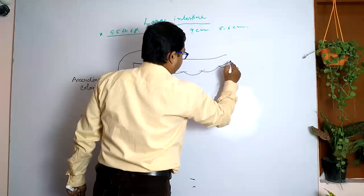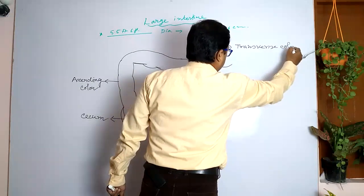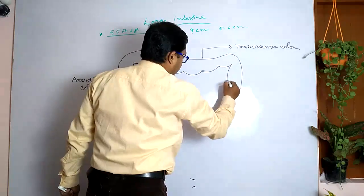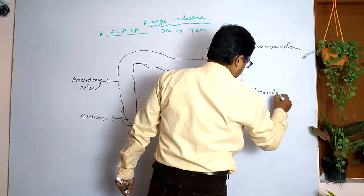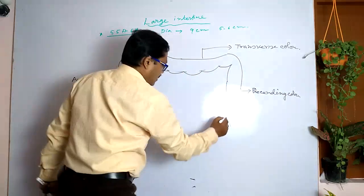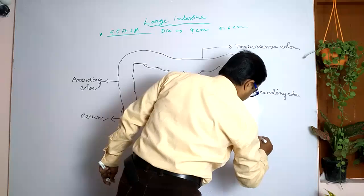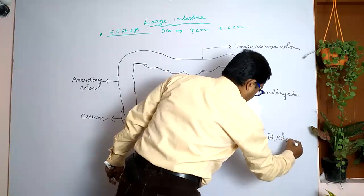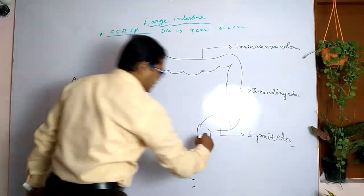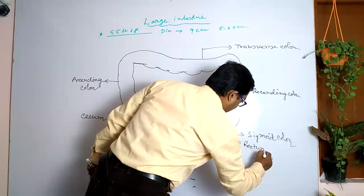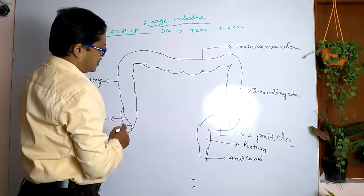This is the transverse colon, and some saccules are observed in the colon. Then there is the descending colon, then the S-shaped sigmoid colon. Then the rectum, and the last part is called the anal canal. This is more or less the structure of our large intestine.